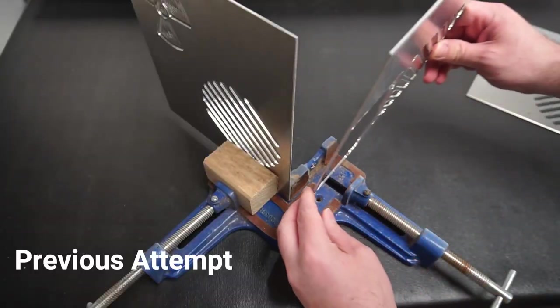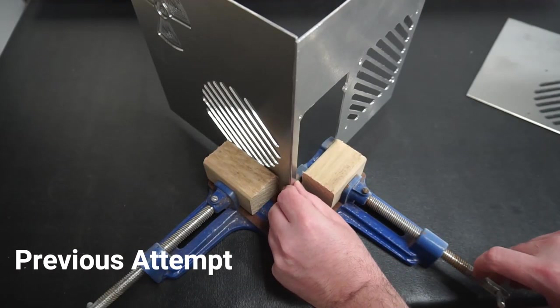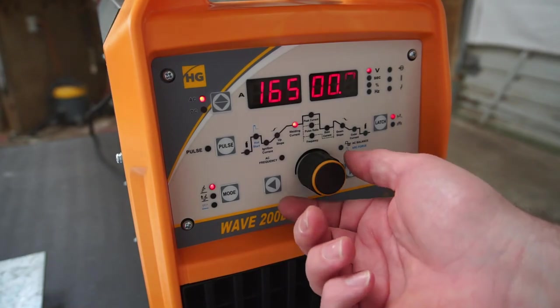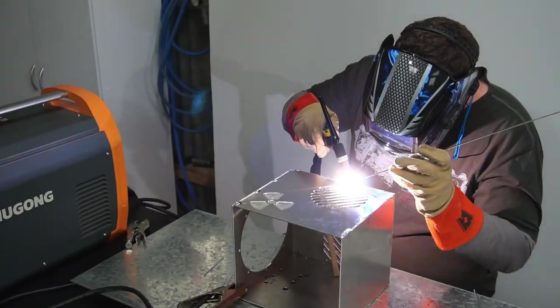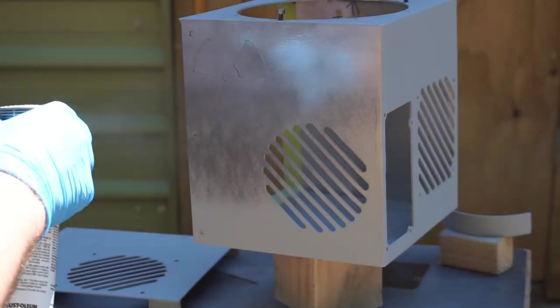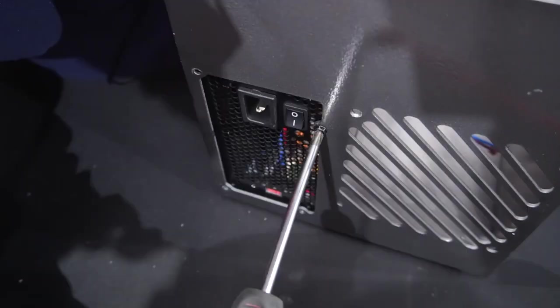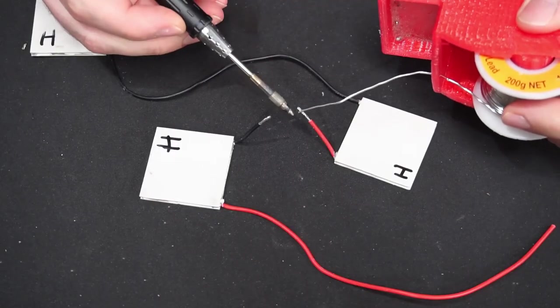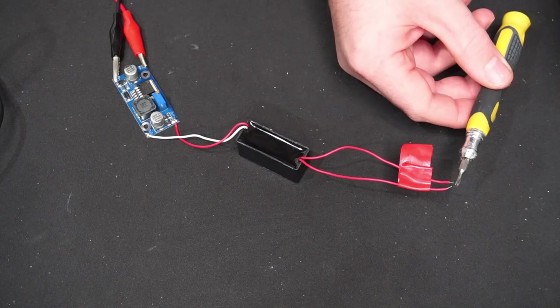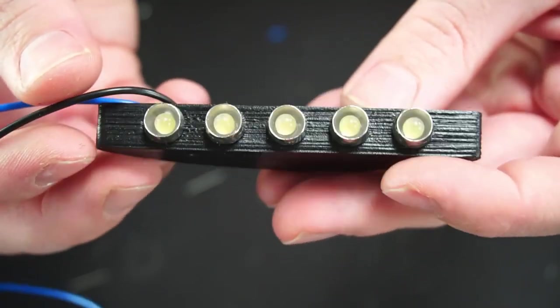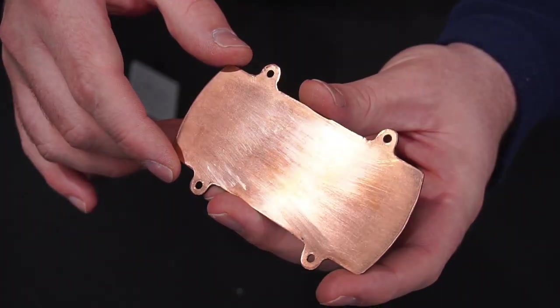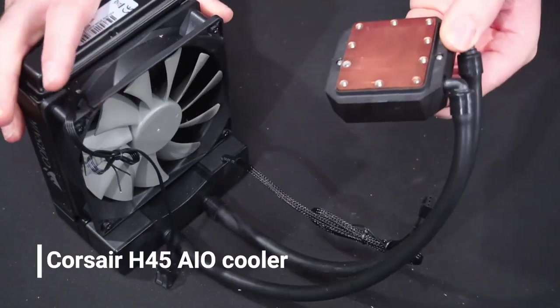Most of the components from my previous attempt are being used in this new version. If you haven't seen that video you can click the link in the top corner to watch it. I'm using the same enclosure, ATX power supply, 12 710 Peltier stacks, high voltage setup, LEDs, copper cold plate and H45 coolers.